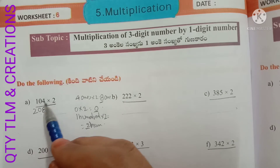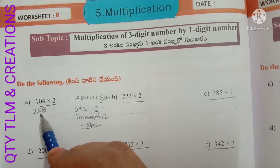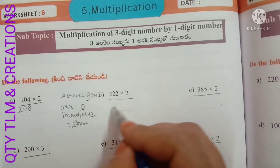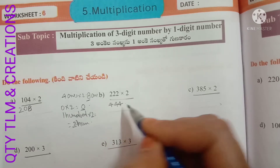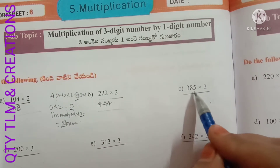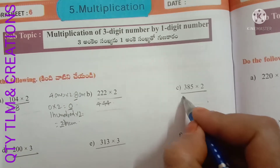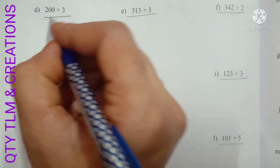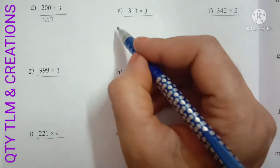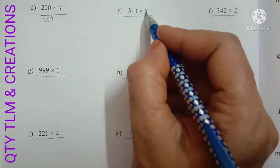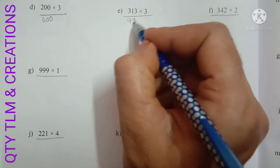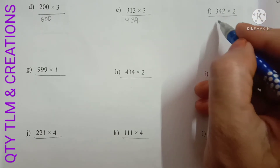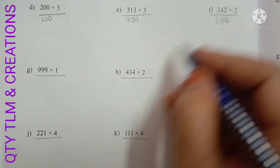So 104 into 2 equals 208. Next B: 222 into 2, we will get 444. Next C: 385 into 2, we will get 770. Next D: 200 into 3, we will get 600. Next E: 313 into 3, we will get 939. Next F: 342 into 2, we will get 684.